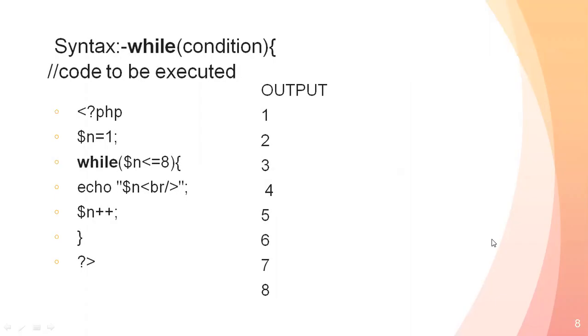If we look at the syntax, the while loop syntax is: while (condition) and then curly braces containing the code to be executed.